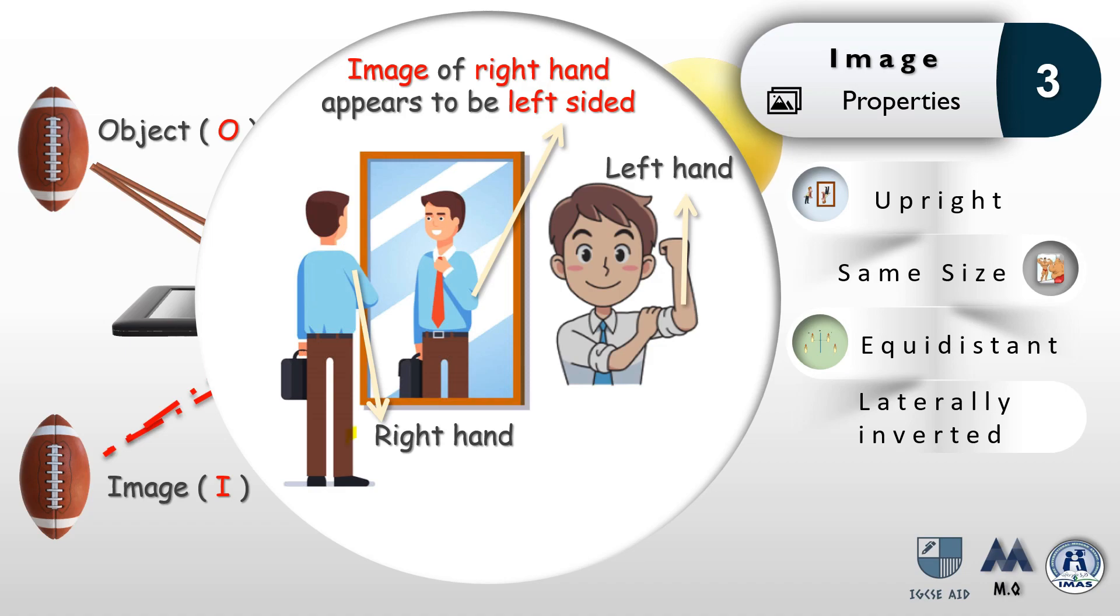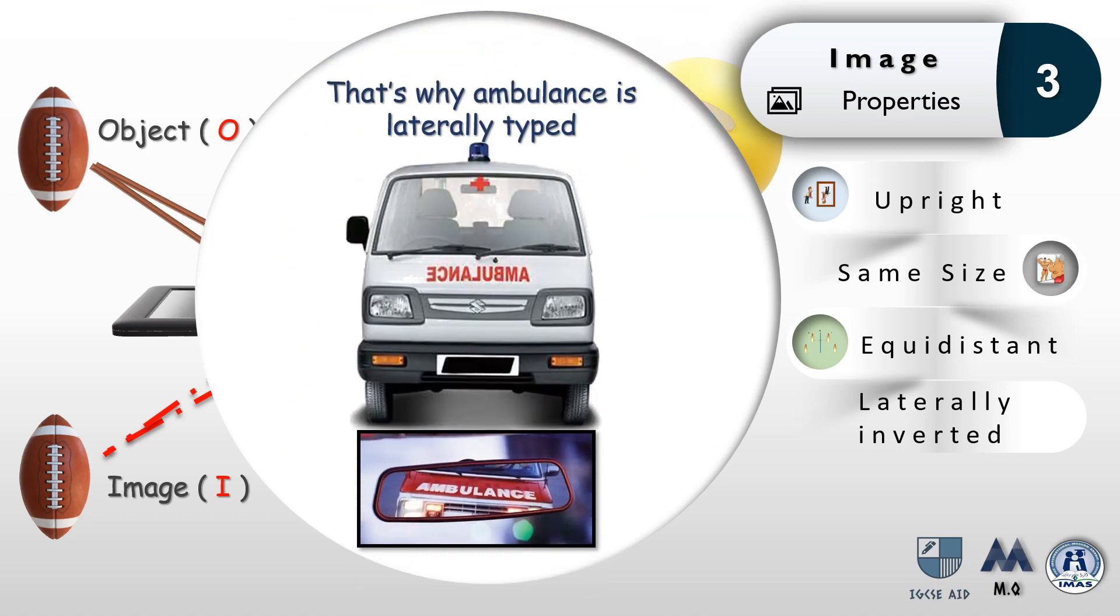The man looking into the mirror—this is his right hand over here. When you look at the image of his right hand, the image of his right hand appears to be left-sided. Compare it to the boy. If the boy is looking towards you, the image is also looking towards you. This hand is the left hand of the boy, and this hand appears to be on the left side of the image, but in reality it's actually the reflection of the right hand of the man.